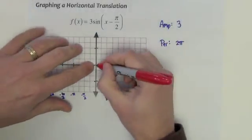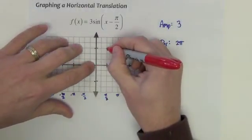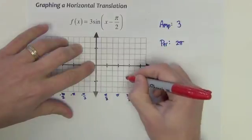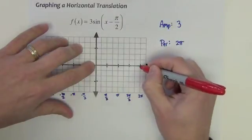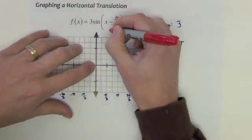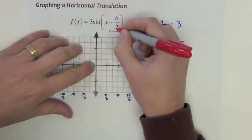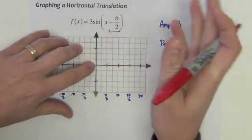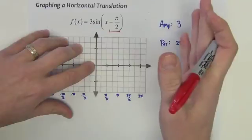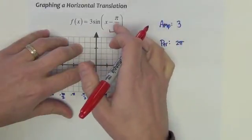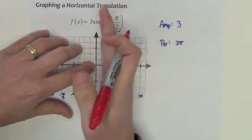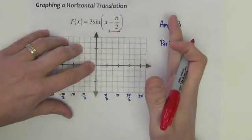It would start right here, and then it would go up its amp, down to zero, down its amp, back to zero. This graph, however, has got this here, this horizontal translation. And if you recall from our study in college algebra, we said that anything you subtract on the inside moves the graph to the right that amount. If we add it, it moved to the left. It's always opposite of its sign.